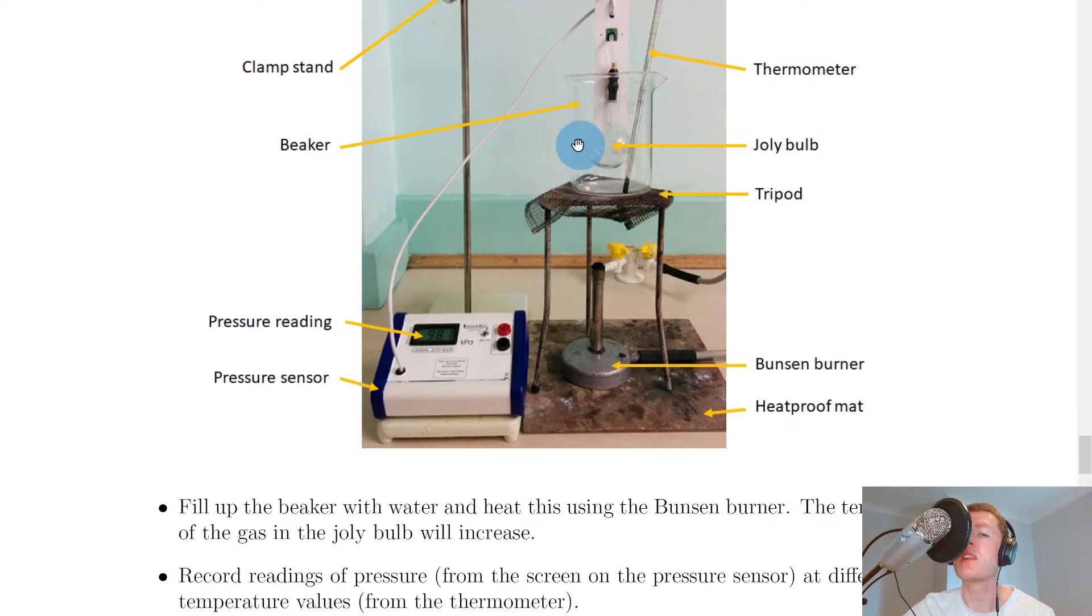So it's to ensure that the gas inside the bulb is heated evenly throughout so there's even heat distribution. So if you imagine filling the beaker to cover only about half of the jolly bulb then that means only half of the gas in the jolly bulb is going to be heated. So in order to get even heat distribution throughout the whole jolly bulb you need to cover the entire jolly bulb. And the best way to do that is just by filling up the beaker to near the top.